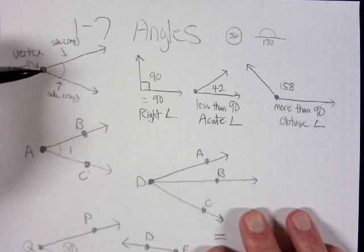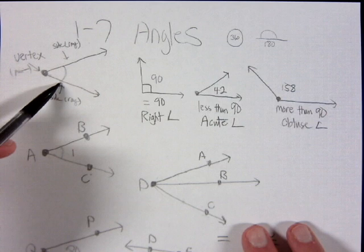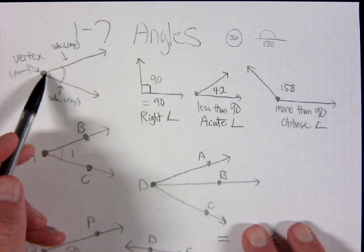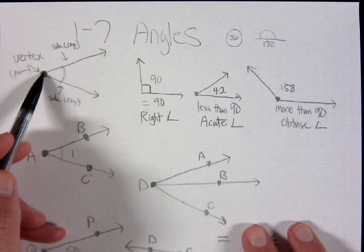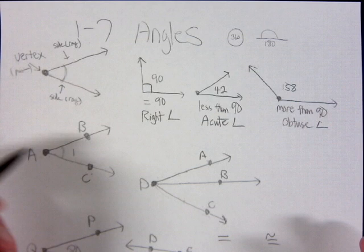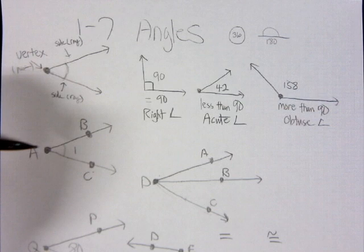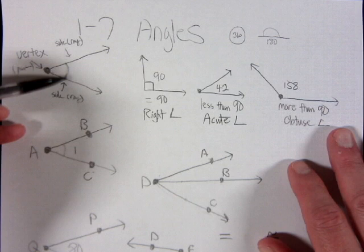An angle is formed by two rays that have the same starting point. The angle is made from two rays, which are considered the sides of the angle. The starting point — that's the vertex, where it comes from. So an angle is made from a vertex and two rays.